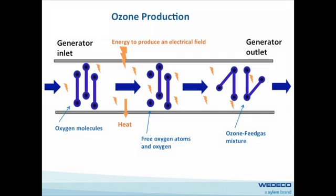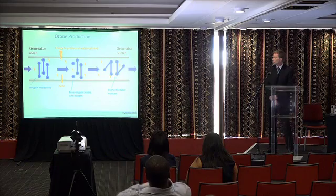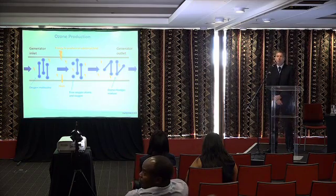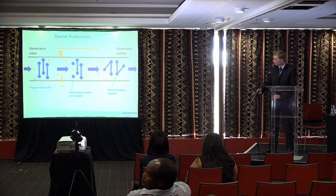As mentioned, it's generated through a discharge gap — you've got electrodes where you pass a stream of oxygen through with a high-intensity electric current, separating the oxygen molecules to form O3. You're only forming about 10% to 12% ozone in an oxygen stream. You don't really want to go much more than that — at about 16%, ozone starts becoming a bit explosive.